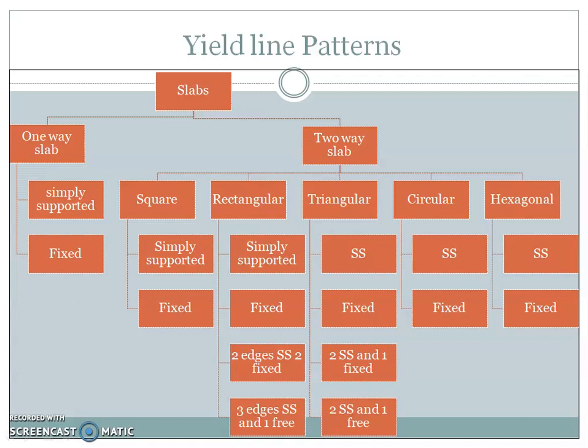For square slabs, we have simply supported and fixed cases. For rectangular slabs, we have simply supported, fixed, two edges simply supported, two fixed, three edges simply supported and one free — and many more important cases. For triangular slabs: simply supported, fixed edge, two sides simply supported and one fixed, two sides simply supported and one free, and so on. For circular and hexagonal slabs, we have two cases each.